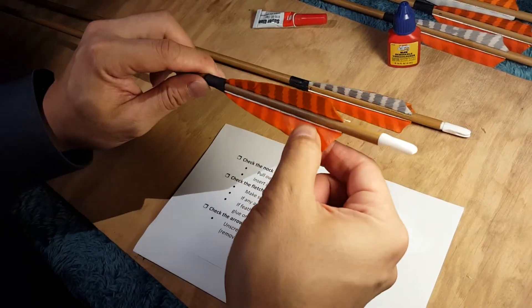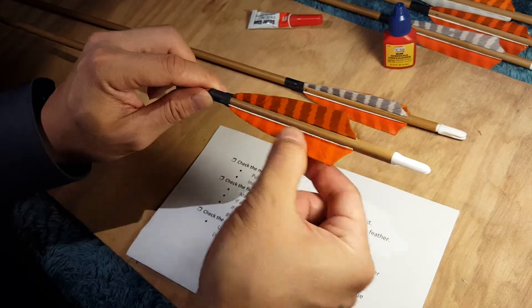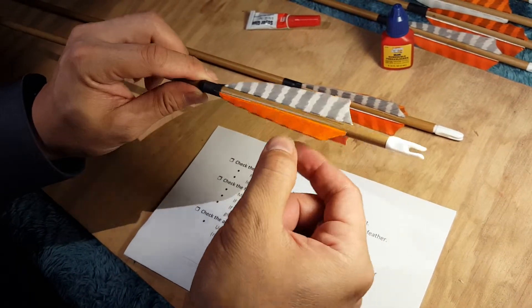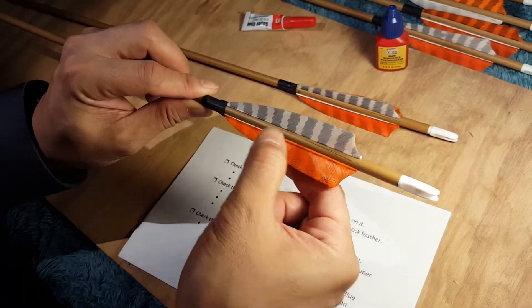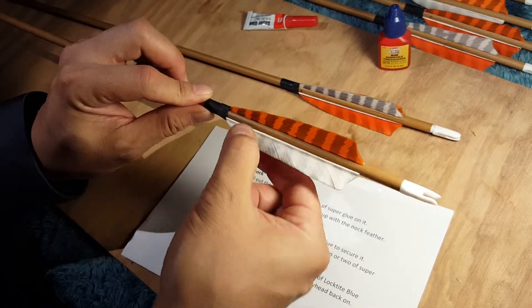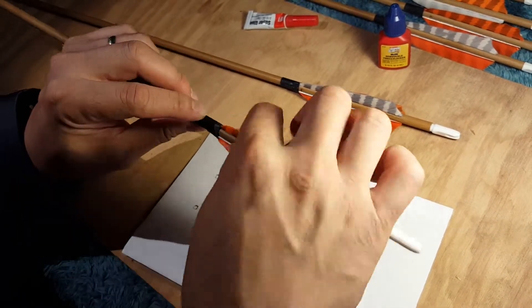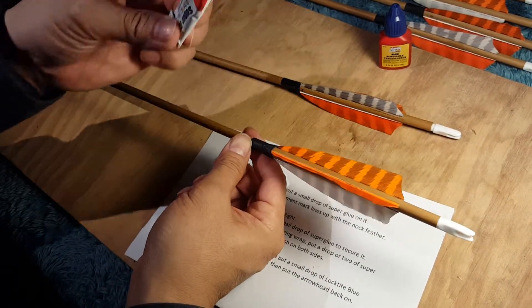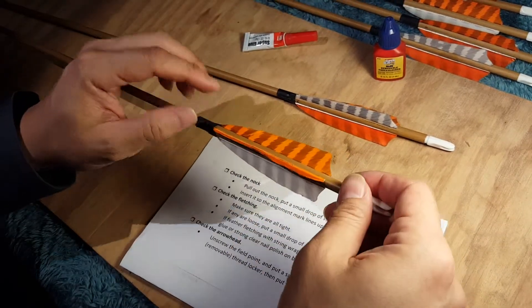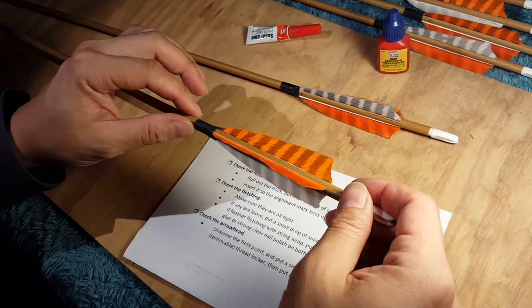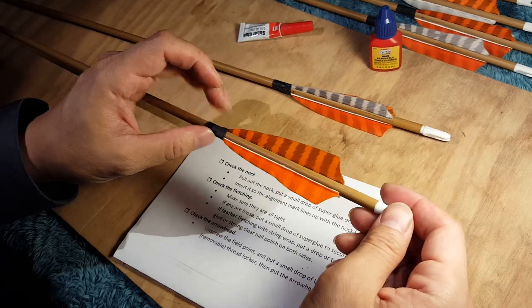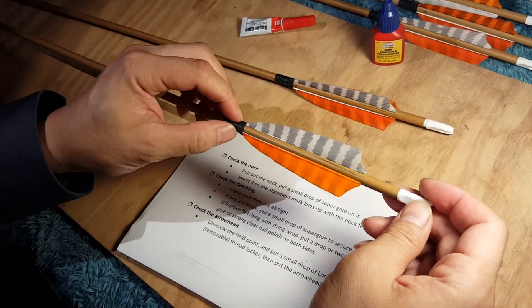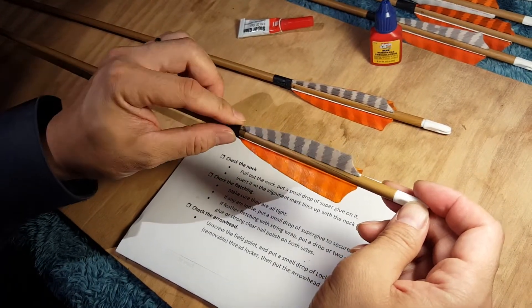Next step is to check the fletching. Whether it's feather or plastic, give it a gentle tug and make sure that it's tight all the way down. If any of it's loose, once again your handy super glue will take care of that. If it's a nice wooden arrow or a more traditional arrow, you may have situations like this heat shrink tube here.